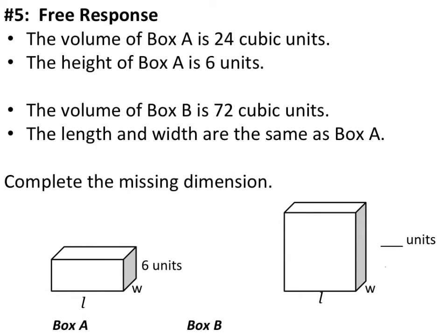The second-to-last example tells us that box A has a volume of 24 cubic units and a height of 6 units. Box B has a volume of 72 cubic units, with the same length and width as box A. The volume has been tripled from box A to box B, so the height of box B will also be tripled — making the height of box B 18 units.